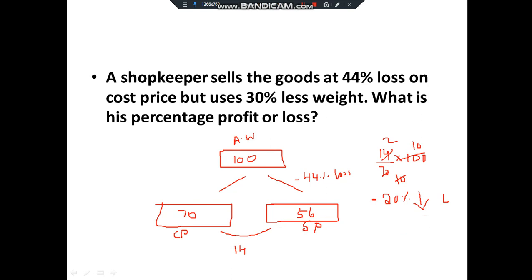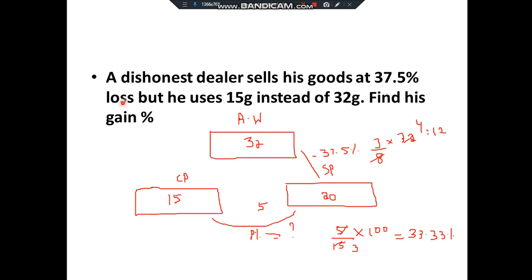Question 11: 'A dishonest dealer sells goods at 37.5 percent loss but uses 15 grams instead of 32 grams. Find his gain percentage.' Here the actual weight is 32 (not 1000), since specific non-standard values are given. Cost price = 15. Selling price: 37.5% = 3/8 as a fraction, so 3/8 × 32 = 12; selling price = 32 − 12 = 20. Now find the profit or loss percentage using cost price = 15 and selling price = 20.